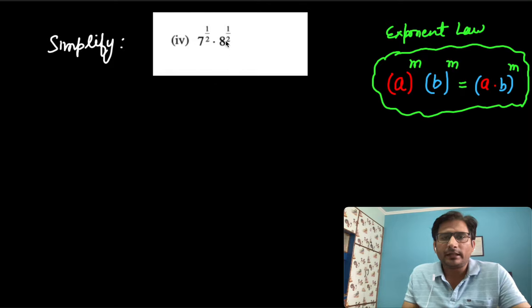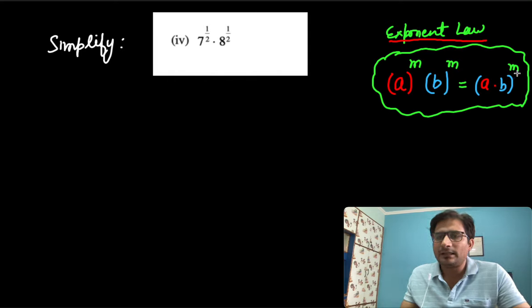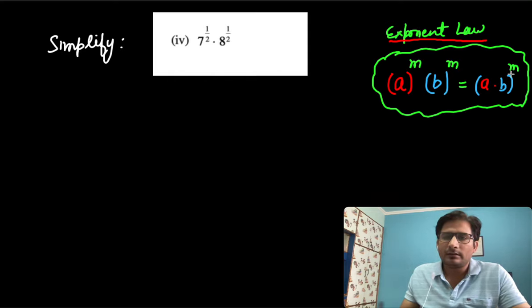If I have 7 power 1 by 2, 8 power 1 by 2, so this exponent law we need to apply here. If the base is different and power is same, exponent is same, so the base is written in multiplication and exponent written in their power.